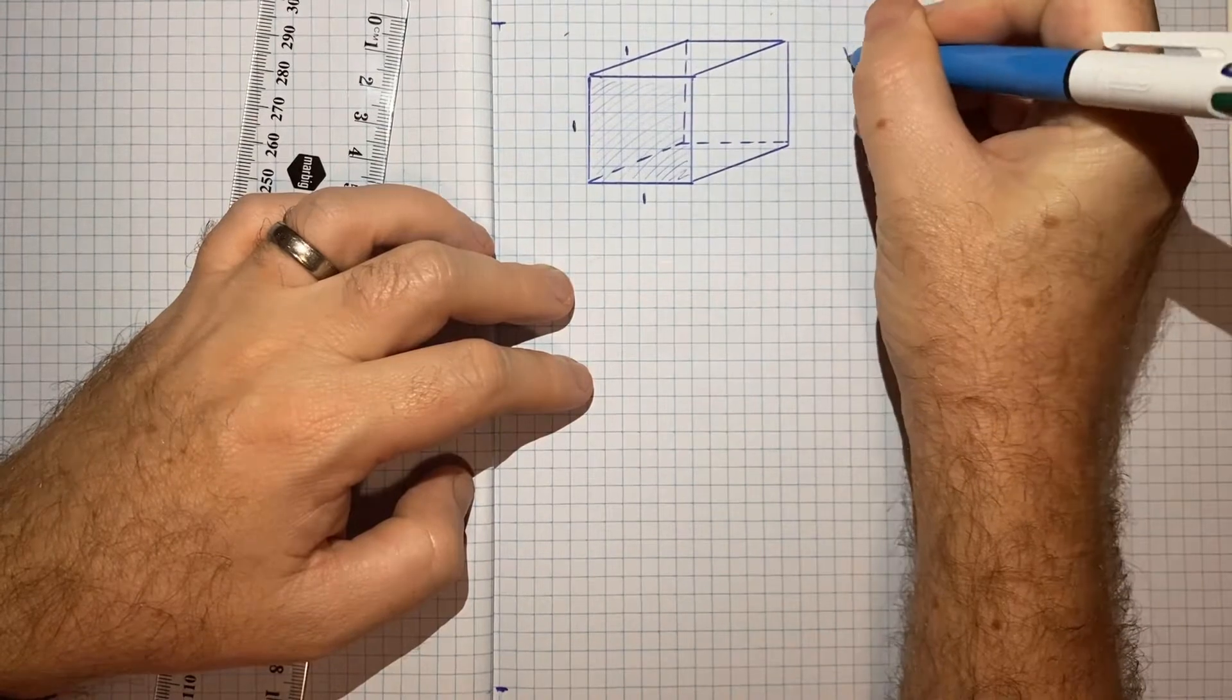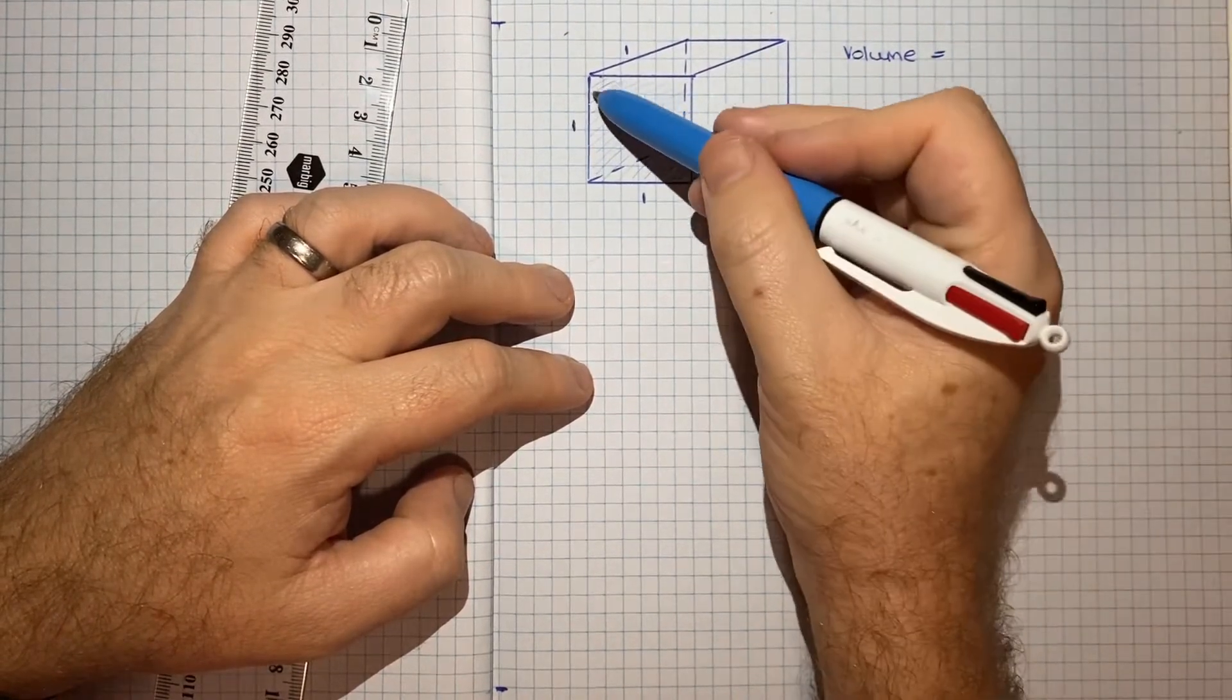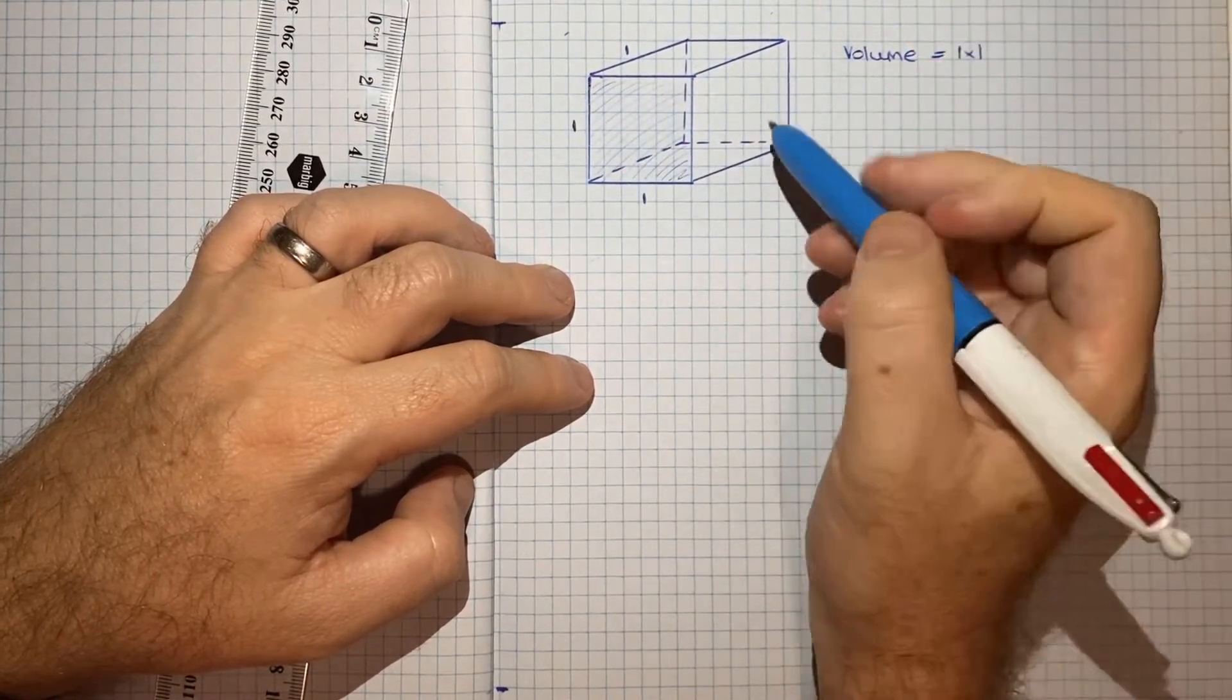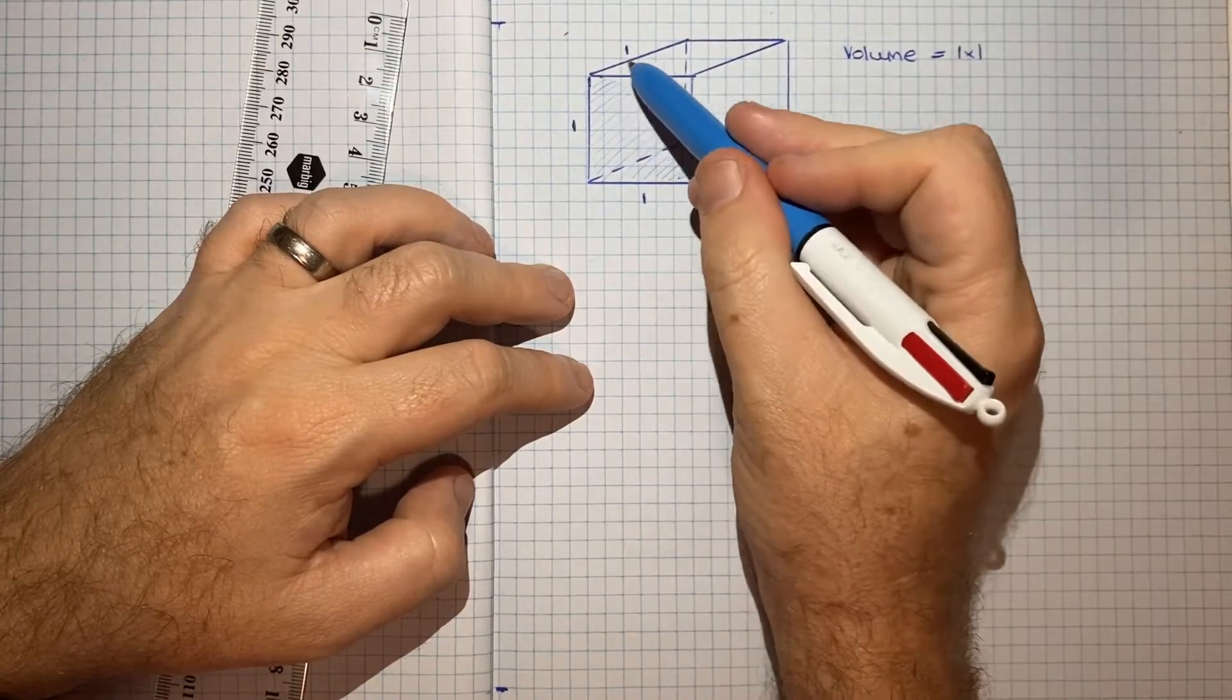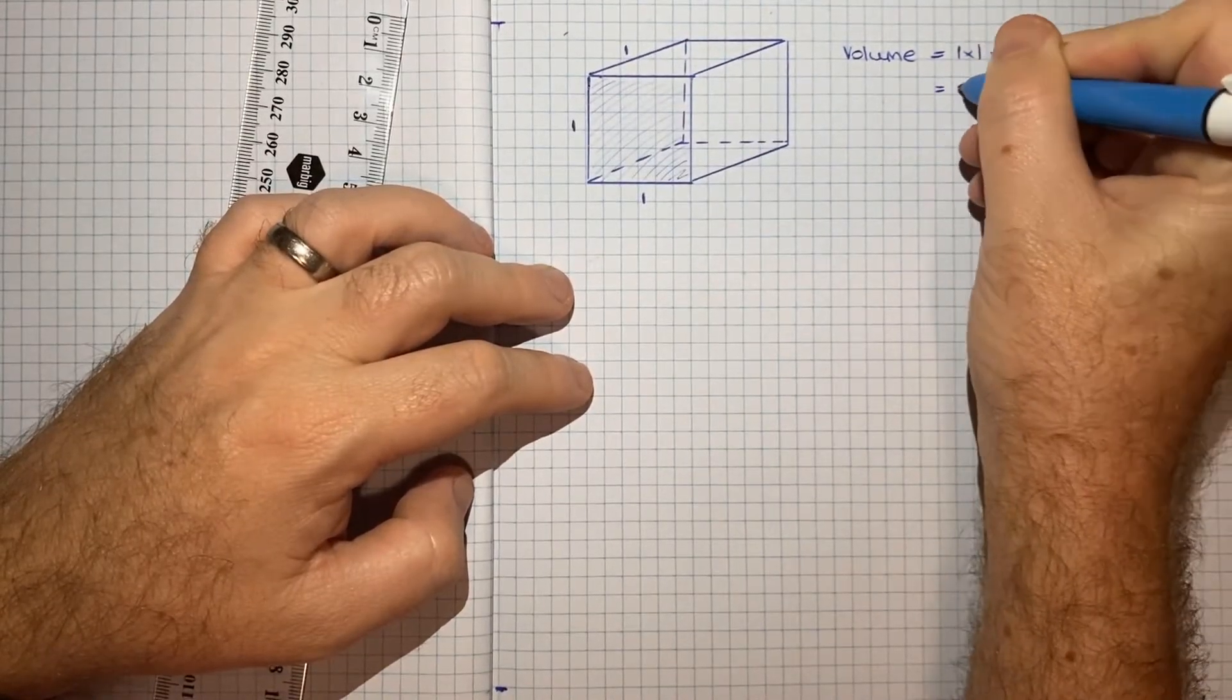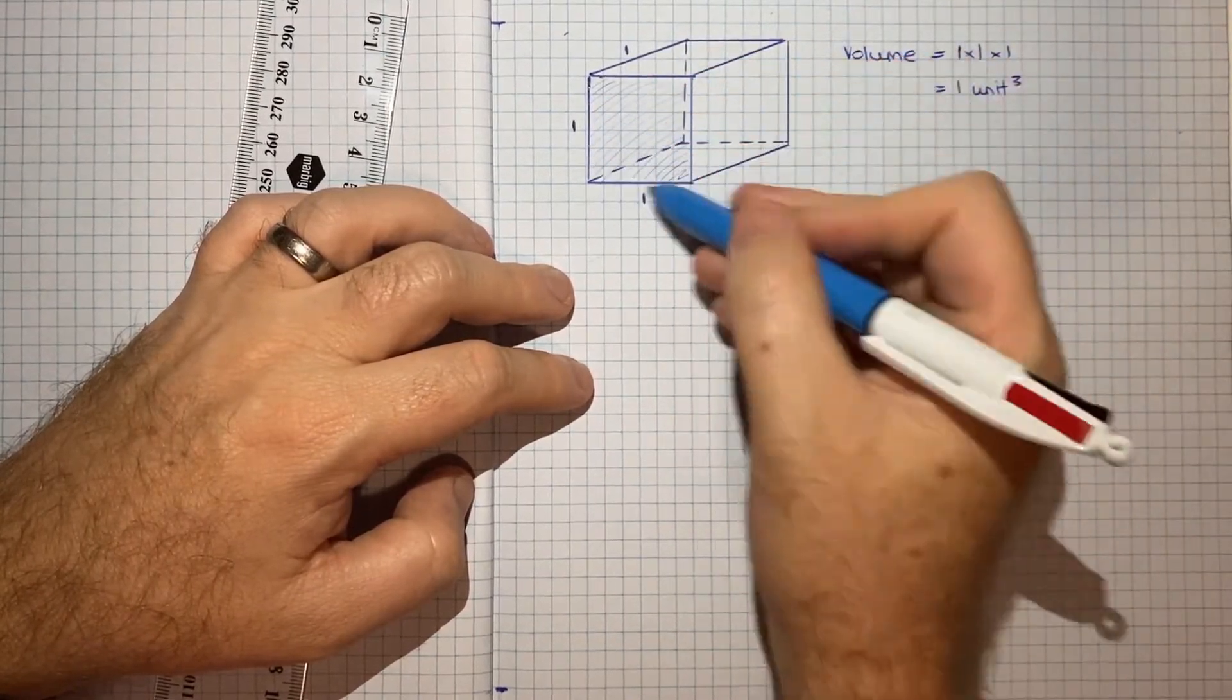And it's the area of that face multiplied by the height. So here the volume would be equal to the area of this face here, which would just be 1 times 1, and then that area multiplied by the height, so that would then be times 1. So here it would just be 1 unit cubed. So this is like a unit cube.